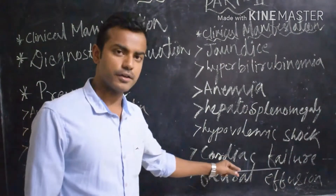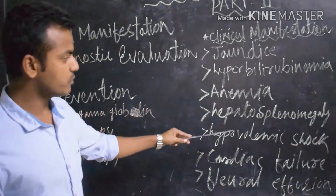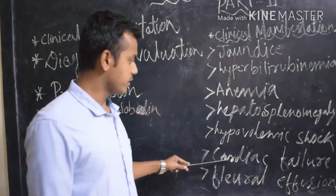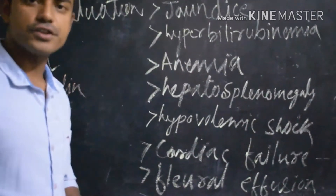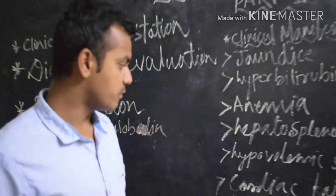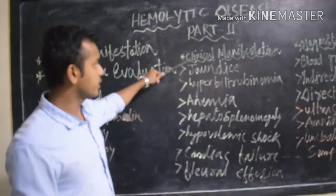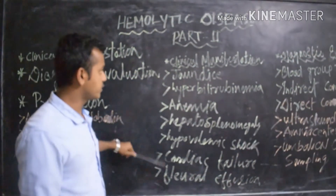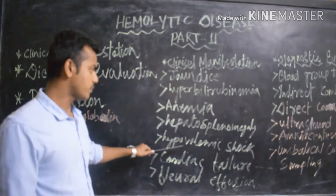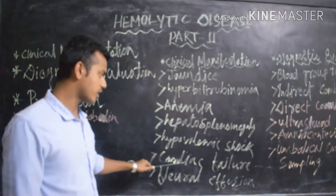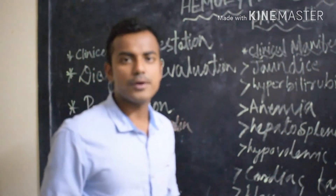Hypovolemic shock is a decreased blood volume level in the body. Cardiac failure occurs due to hypovolemic shock, which leads to cardiac failure. Pleural effusion means there is a collection of fluid in the pleural space. This covers the clinical manifestations: jaundice, hyperbilirubinemia, anemia, hepatosplenomegaly, hypovolemic shock, cardiac failure, and pleural effusion.